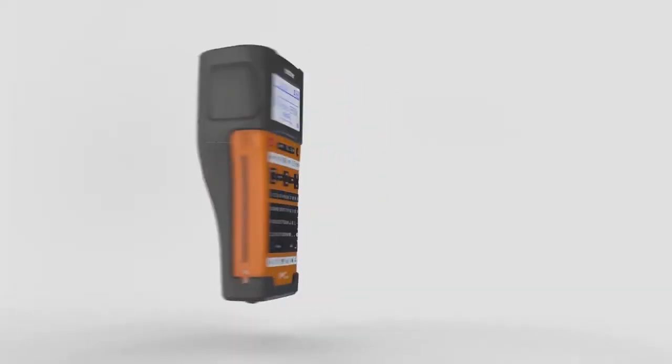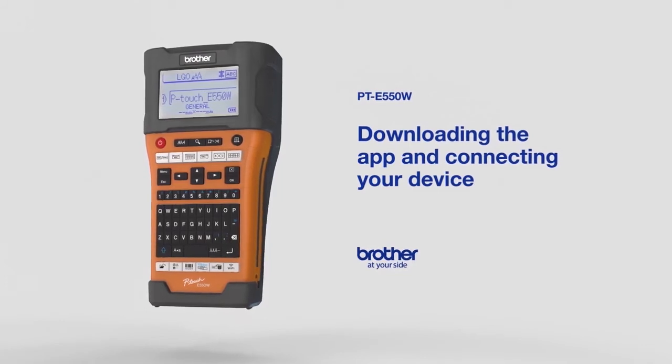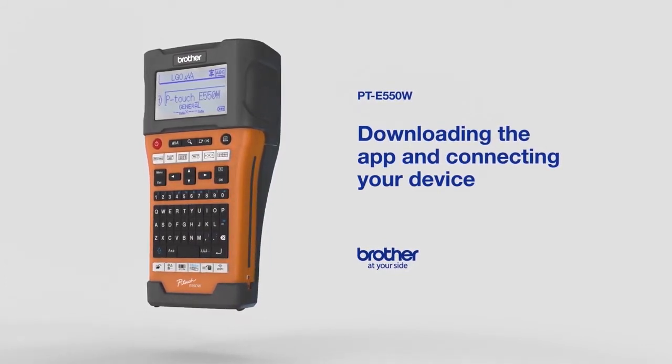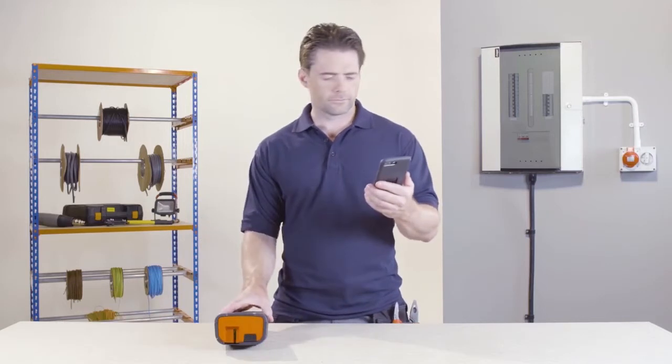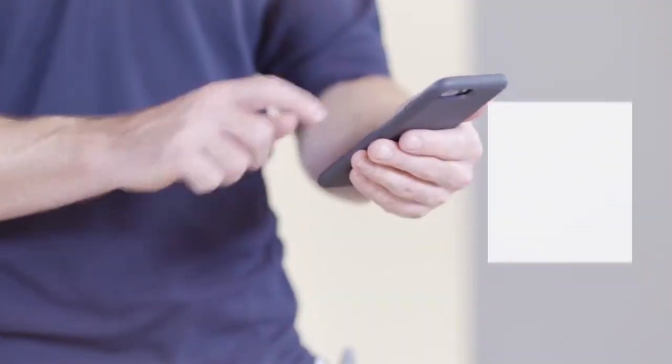This video will guide you through the simple steps required to connect your mobile device to your PT-E550W printer using Wireless Direct, so you can use the Mobile Cable Label Tool to help you comply with the latest wiring regulations.